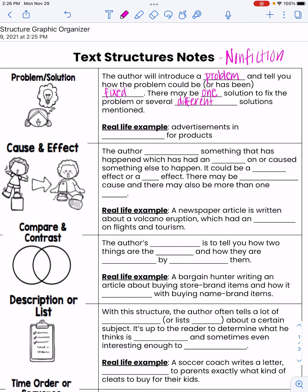A real-life example of a problem and solution text structure is advertisements in magazines or on TV for products. If you have yellow teeth, use this special toothpaste to make your teeth white. It gives you a problem — yellow teeth — and a solution — whitening toothpaste to fix the problem. So problem and solution is really just identifying what the problem is and then what the solution or solutions are.